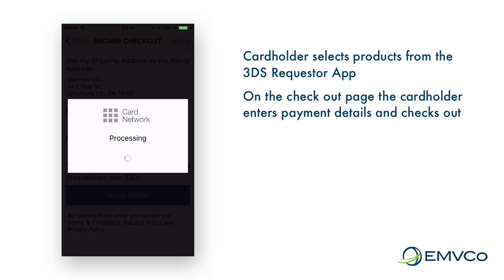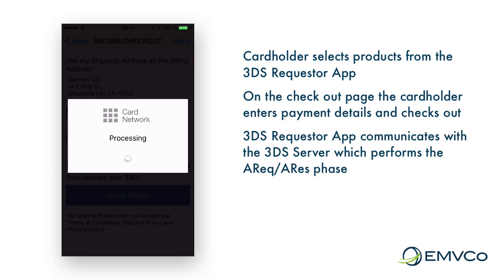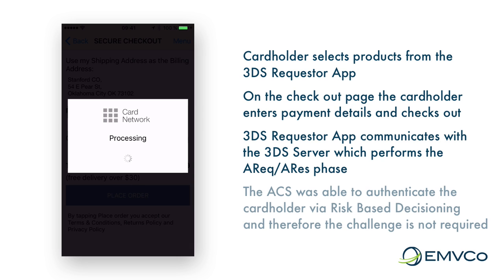After this, the app communicates with the 3DS server, which then sends the authentication request, or AREC, message through the directory server to the ACS, and then receives the authentication response — the AREC message — as the final response.